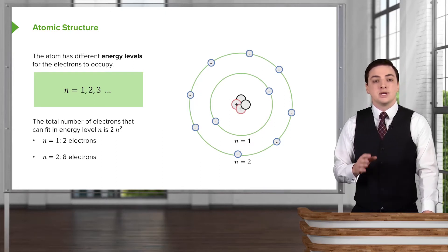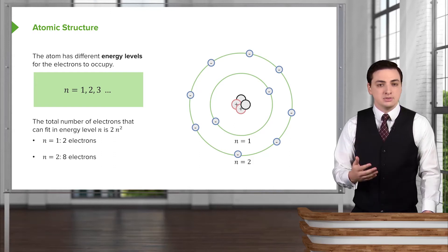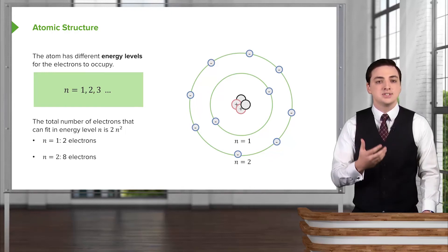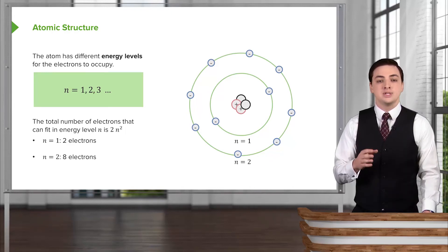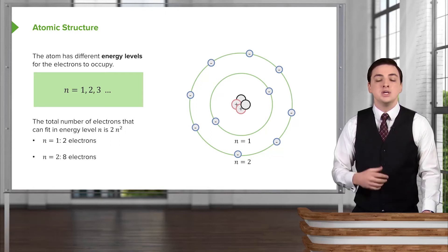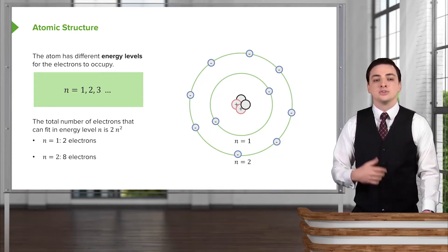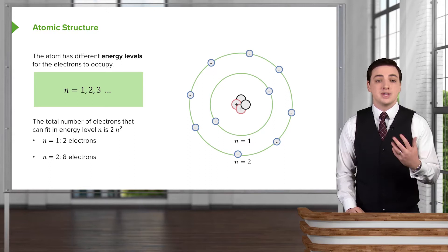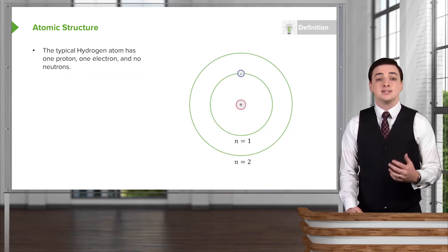This number is given by two times the energy level squared. So for example, in the first energy level, this ground state that's closest to the nucleus, we can have two times one squared, or two electrons in that energy level. And we can calculate this for a number of others. For example, for the second energy level, we have two times two squared, or two times four, which is eight electrons that can reside in the second energy level.